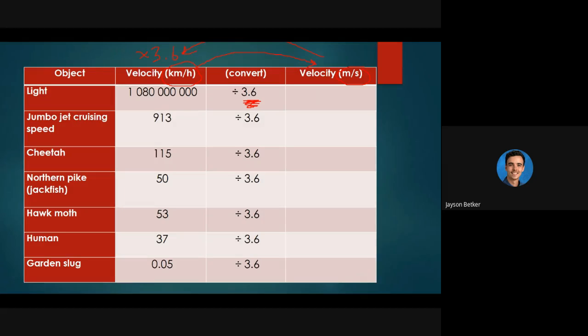What I want you to do, I'll show it on the next slide but you can pause right here, convert the speed of light, convert the jumbo jet, convert the cheetah, the jackfish, the hawk moth, the human, and the garden slug. Convert those all from their velocities in kilometers per hour to their velocities in meters per second. You just go on your calculator and divide by 3.6. If you pause now, then we can move forward to what the actual answers are.